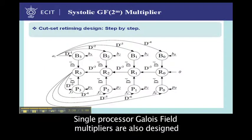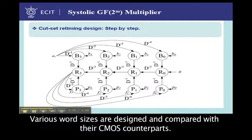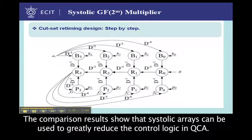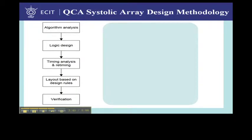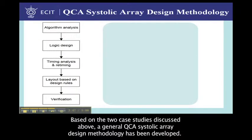Single processor Galois field multipliers are also designed. Various word sizes are designed and compared with their CMOS counterparts. The comparison results show that systolic arrays can be used to greatly reduce control logic in QCA.